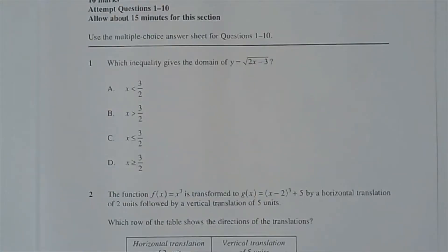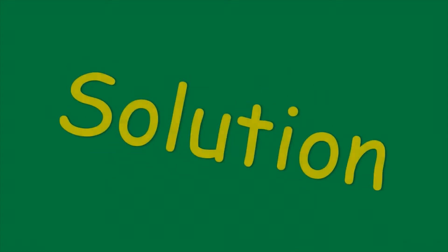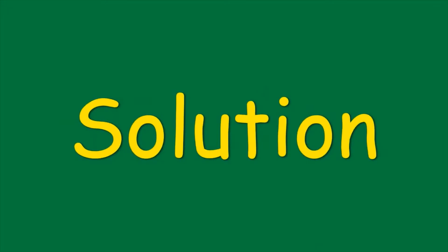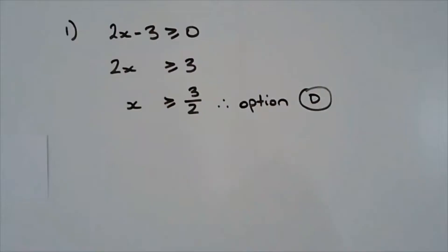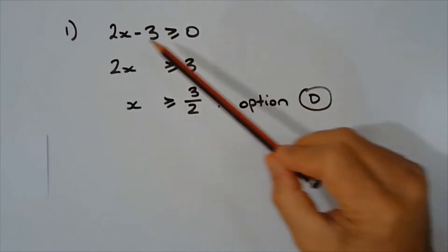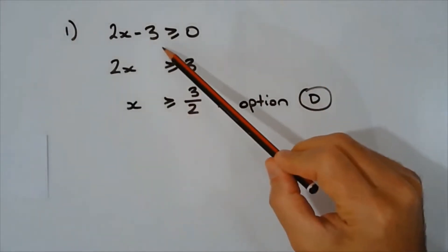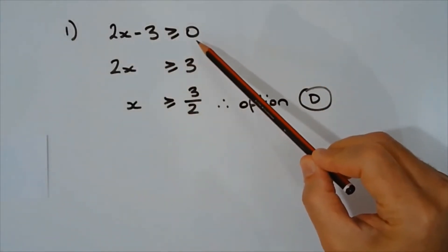Question 1. Which inequality gives the domain of y equals the square root of 2x minus 3? What's inside the square root must be greater than or equal to 0. That means 2x minus 3 must be greater than or equal to 0.